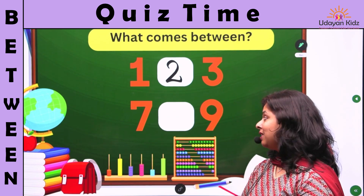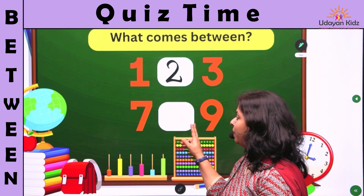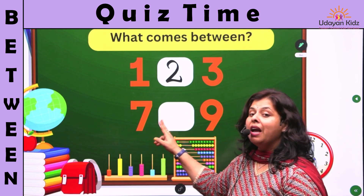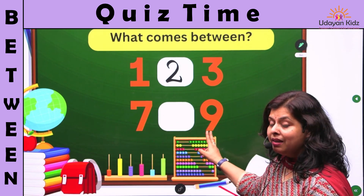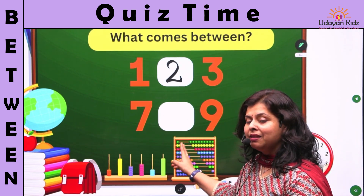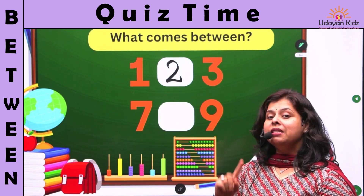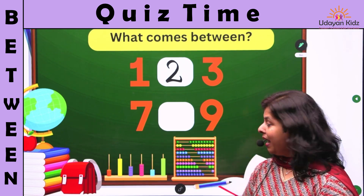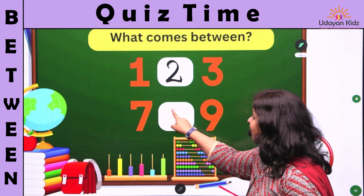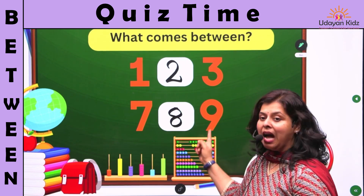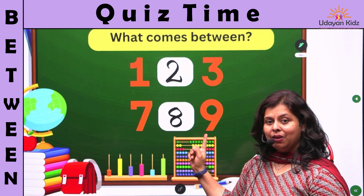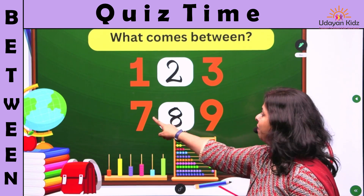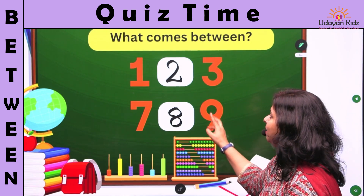Well done, children. And next, what comes in between number seven and number nine? Let's count: seven, eight, then nine. Seven, eight, nine.